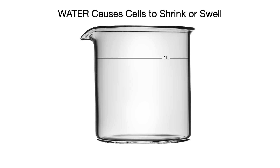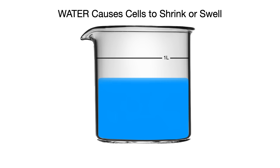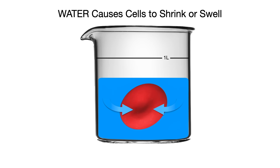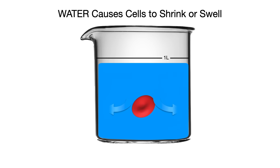First, know that it's water that causes cells to shrink or swell, not solutes — meaning only water can change the volume of a cell, not the tiny solute particles moving in or out. When too much water flows in, the cell swells. When too much water flows out, the cell shrinks.